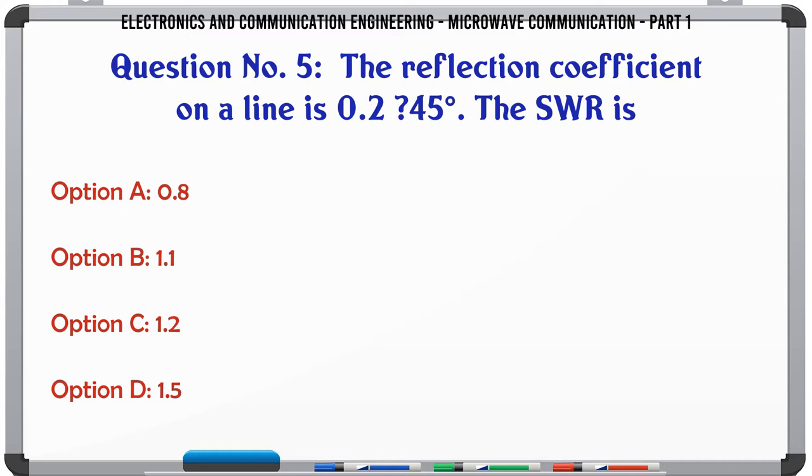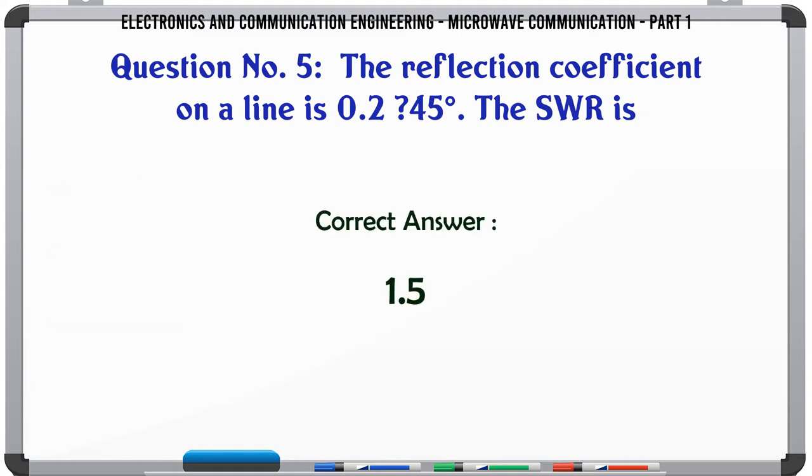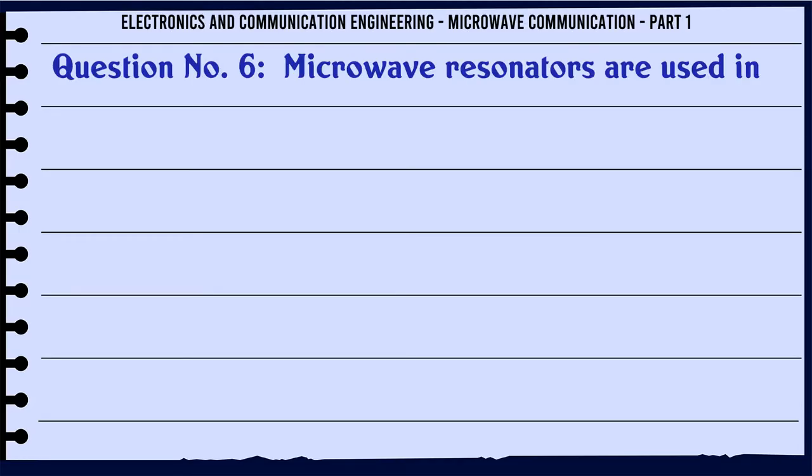The reflection coefficient on a line is 0.245, VSWR is: A. 0.8, B. 1.1, C. 1.2, D. 1.5. The correct answer is 1.5.